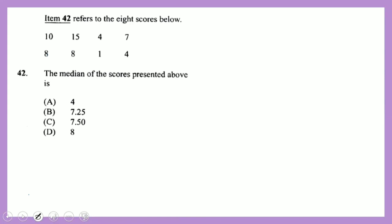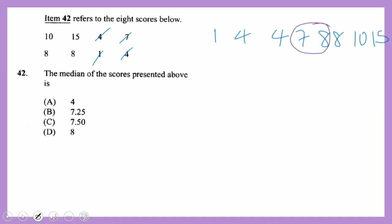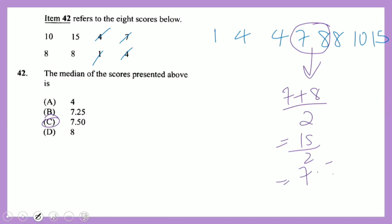Question 42: find the median of 8 scores. First, arrange them in order: 1, 4, 4, 7, 8, 8, 10, 15. With an even count of numbers, there are two middle values — 7 and 8. Average them: (7 + 8) ÷ 2 = 15 ÷ 2 = 7.5.